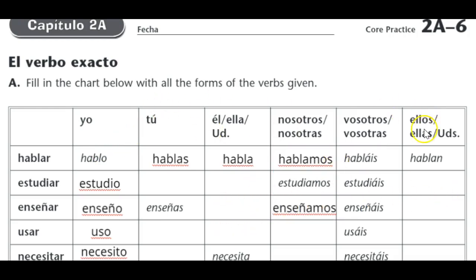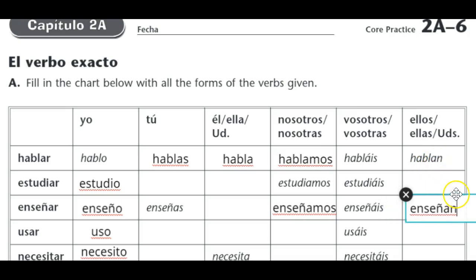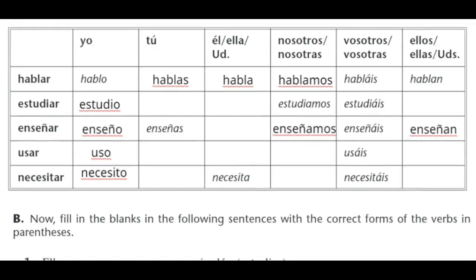Now let's look at the ellos, ellas, ustedes forms on the other side. For enseñar, you copy down to the end of the stem — that's the AR removed — and the ending would be AN. So enseñan — they teach. As you go, make sure you're always thinking about what these all mean. I'll let you do the rest of those on your own.